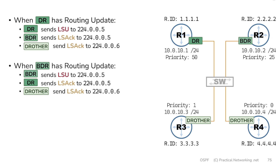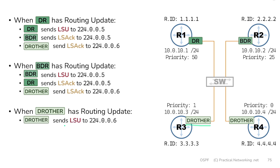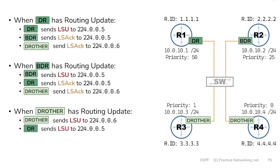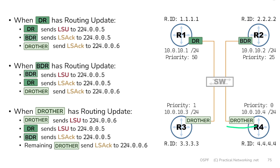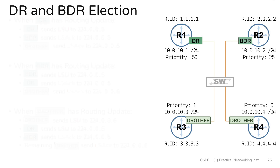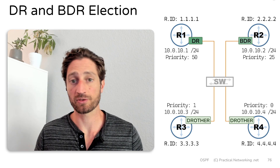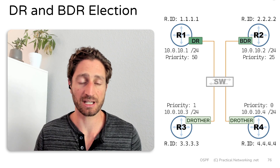The last sequence is what happens if a DR-other has an update to send. The DR-other will send an LSU to the DR and BDR multicast address 224.0.0.6, which means router 1 and router 2 will receive that update. Router 1 will then forward the update to the all-OSPF-routers multicast address 224.0.0.5, which goes to everybody on the link. The BDR will send an acknowledgement to everybody on the link, and any other DR-other will send their acknowledgement to just the DR and BDR. Notice these last three steps are identical to what happens when a DR has an update to send.